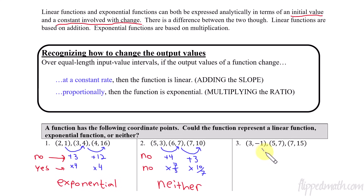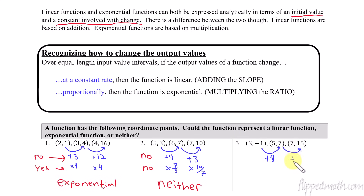Last example: check the x values — 3 to 5 is 2, and 5 to 7 is also 2, so they're equal length. From negative 1 to 7 is adding 8, and from 7 to 15 is also adding 8. Since they're the same constant rate, I can stop — this is linear.